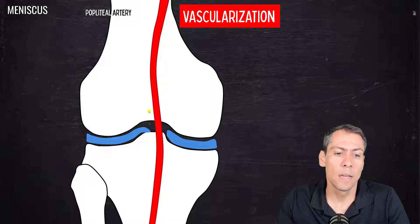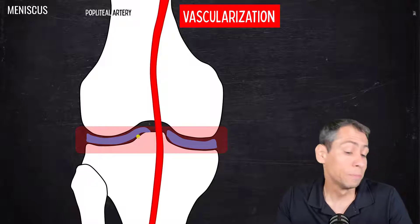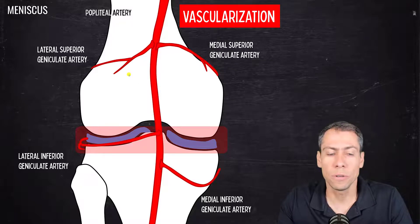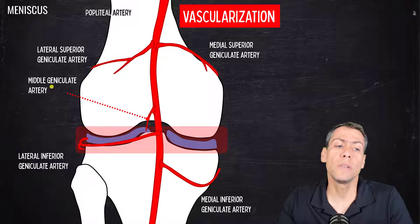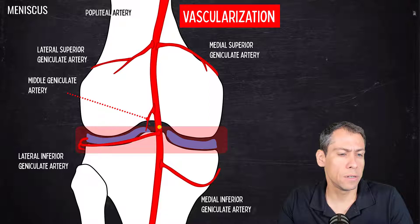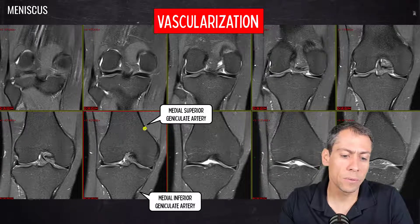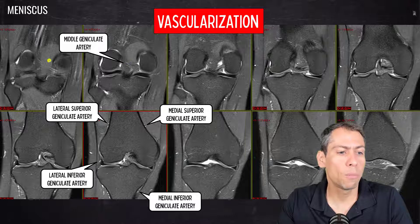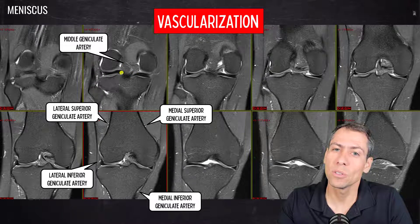Here we have a perimeniscal capillary plexus that goes around the menisci. This plexus is formed by the medial and lateral geniculate arteries — the superior and inferior medial and lateral geniculate arteries — and we also have the middle geniculate artery. So we have five arteries that form the perimeniscal plexus. Here on this PD fat-suppressed coronal image we can see the superior and inferior medial geniculate arteries, the superior and inferior lateral geniculate arteries, and from the popliteal fossa the middle geniculate artery, which supplies the posterior horns, root ligaments of the menisci, and the cruciate ligaments.